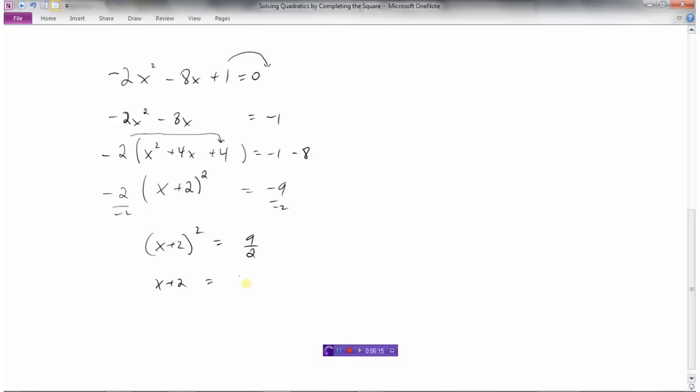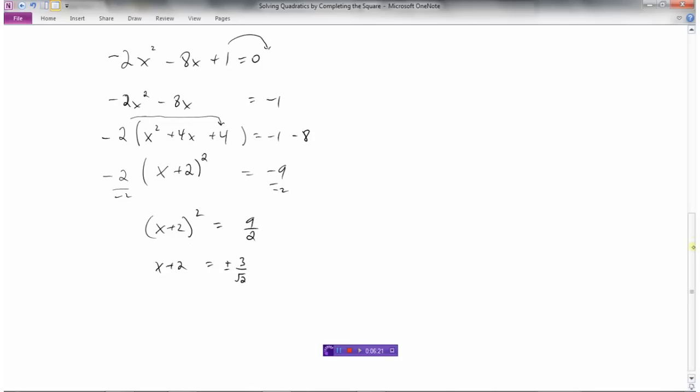The square root of 9 is 3. I can't do the square root of 2, so I'll leave that as root 2. And of course plus or minus every time we square root. And then we can minus 2 from both sides. And we would get this.